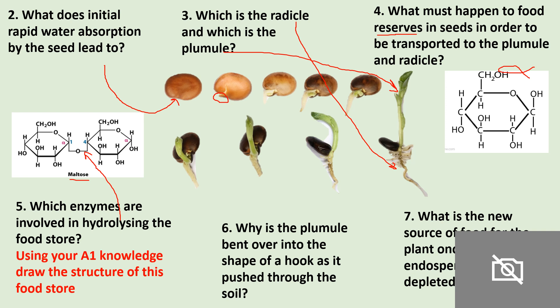Why is the plumule bent over in a hook shape as it's pushed through the soil? This hook-like structure is basically to protect the baby leaves, so that as soon as that little shoot is above ground and in the presence of sunlight, it can photosynthesise. And the new source of food is basically photosynthesis — as soon as that plant can photosynthesise, it will.